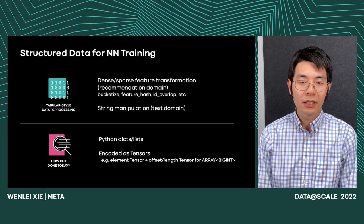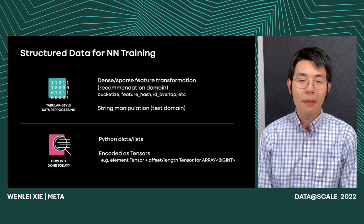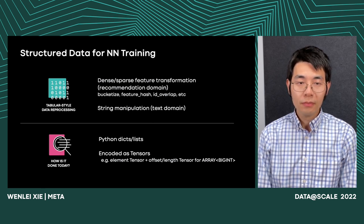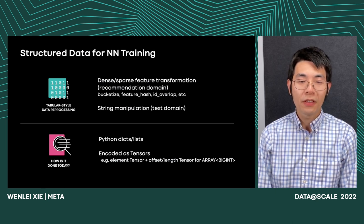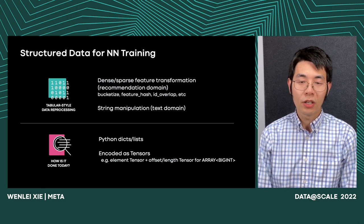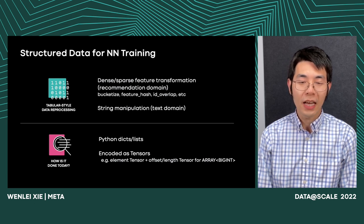While encoding as tensors allows us to solve the efficiency problem — since you can call into highly efficient tensor operations and customize by writing TorchScript custom ops — it often requires some kind of hidden contract on the encoding. For example, is the nullable tensor included in the struct? And does the second tensor represent offset or length? Because some user-defined transformations assume the input tensor encodes the length, so if the actual data comes with offset, you need to manually convert them. Those are error-prone.